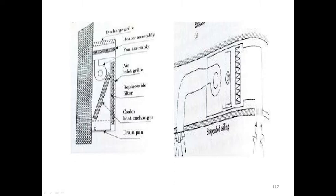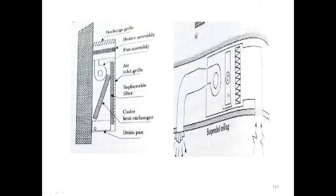The heat exchanger produces cooling energy. The fan coil rotates and increases cooling energy inside the room. The drain pan reduces heat energy. Ceiling-mounted and side-wall-mounted configurations are shown in the diagram. The fan coil rotator, evaporator, and compressor work together — the evaporator releases heat energy and supplies cooling air inside.